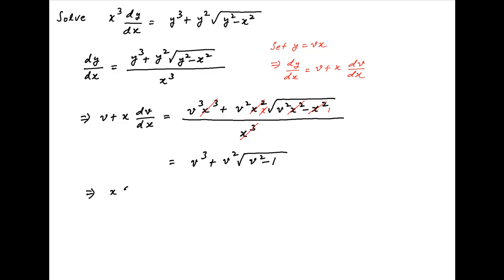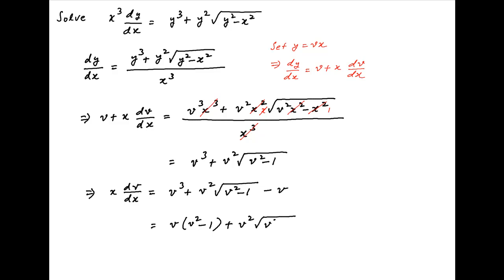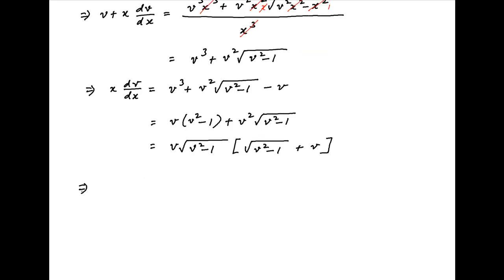Subtracting v from both sides, the differential equation becomes x times dv/dx is equal to v cubed plus v squared times the square root of v squared minus 1 minus v, which factors as v times the square root of v squared minus 1, multiplied by the quantity square root of v squared minus 1 plus v.